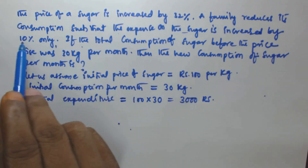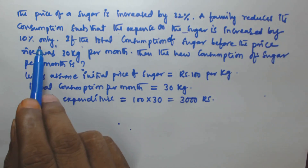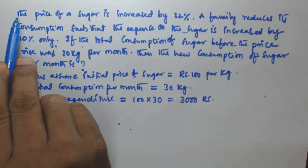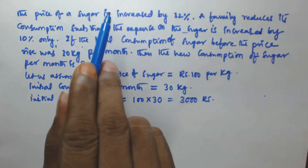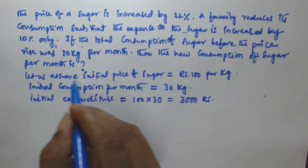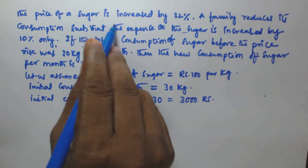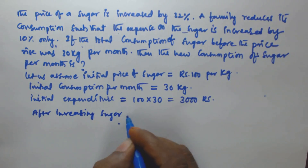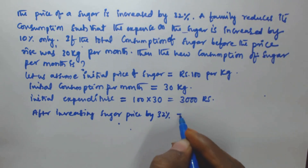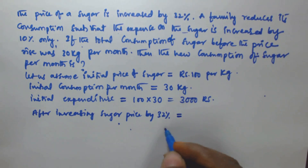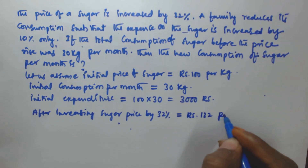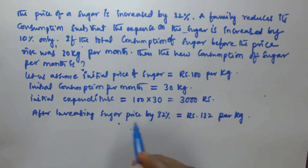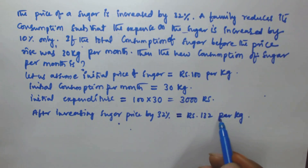It is given that the expense on the sugar is increased by 10 percentage only, and the price of the sugar is increased by 32 percentage. So initially the price of the sugar is 100 rupees per kg. Now after increasing the sugar price by 32 percentage, the cost of the sugar per kg is going to be rupees 132 per kg, because we assumed the initial sugar price is rupees 100 per kg.